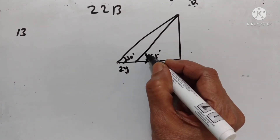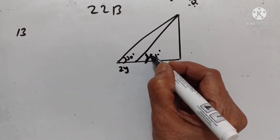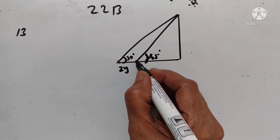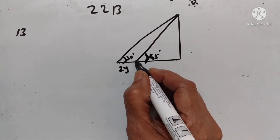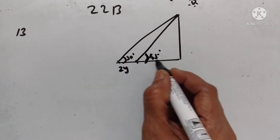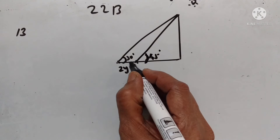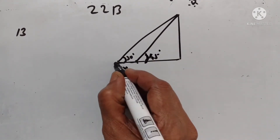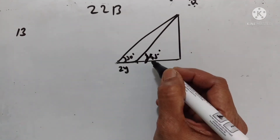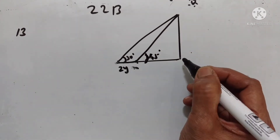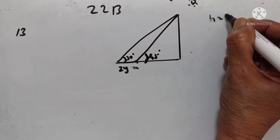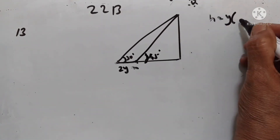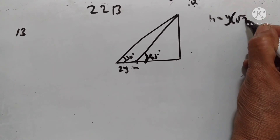When the sun's altitude is 45 degrees, the shadow is this much. When it is 30 degrees, the shadow is this much longer — that is 2y meters. Prove that the height of the tower is y into square root of 3 plus 1.